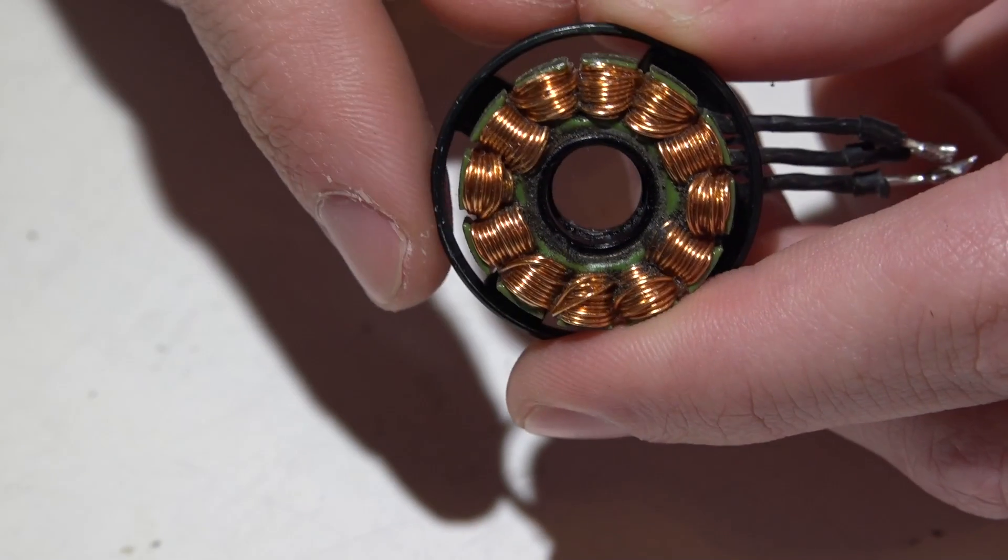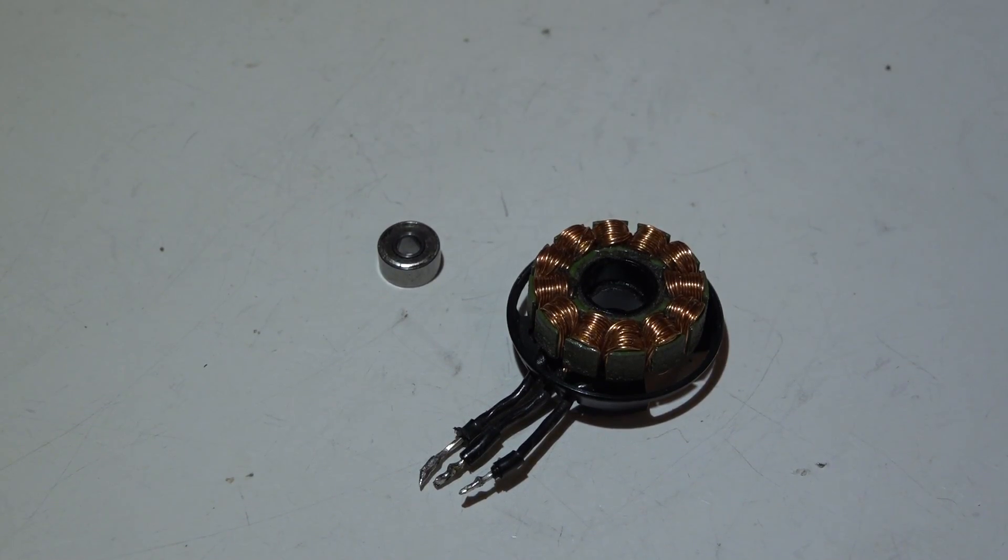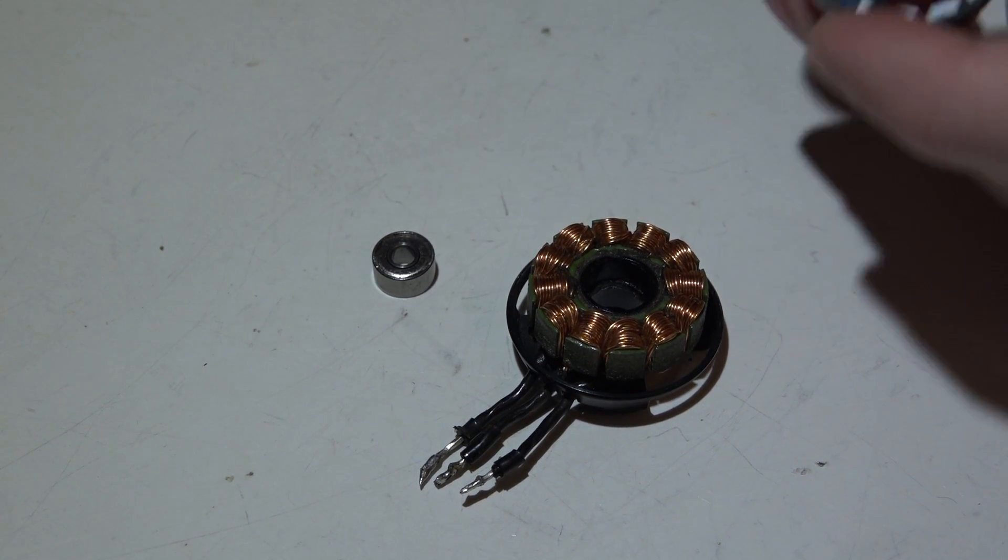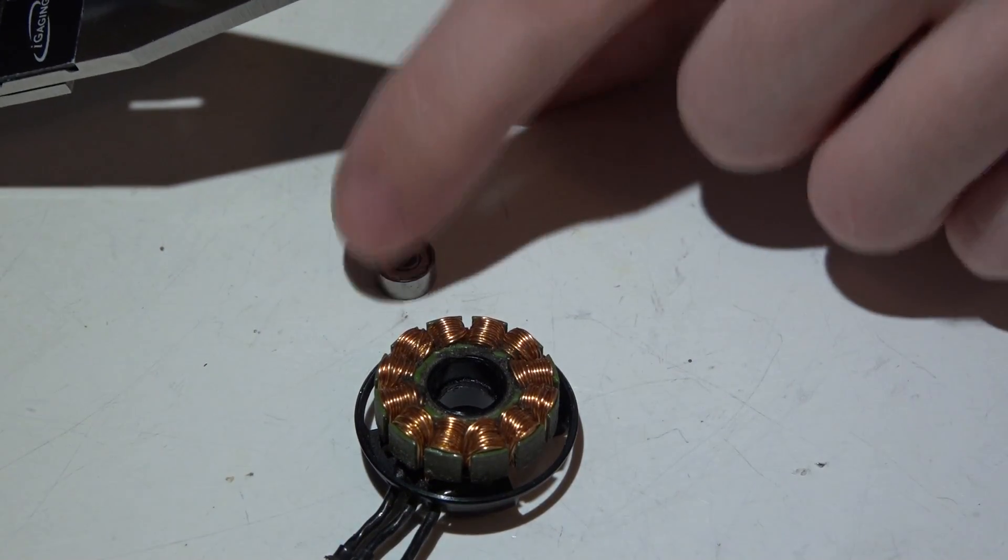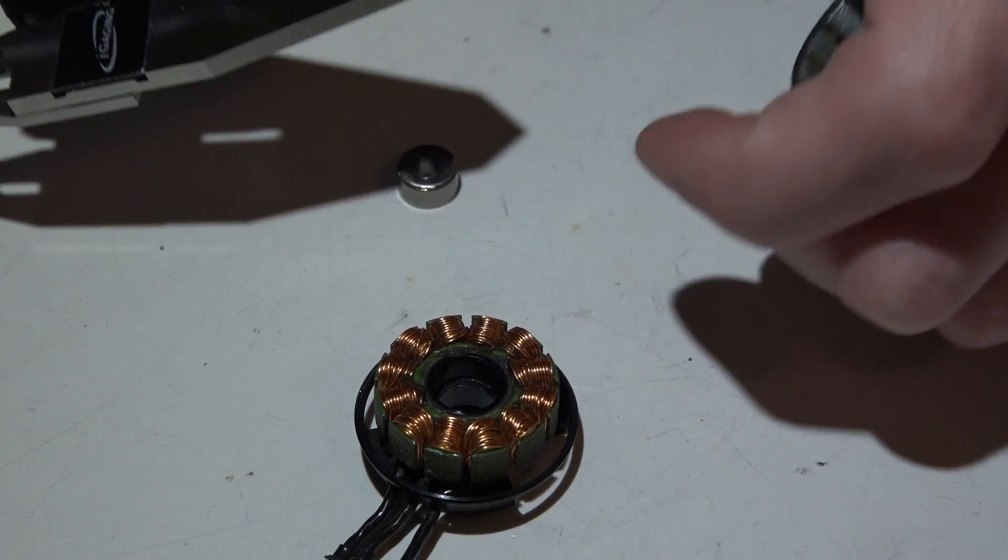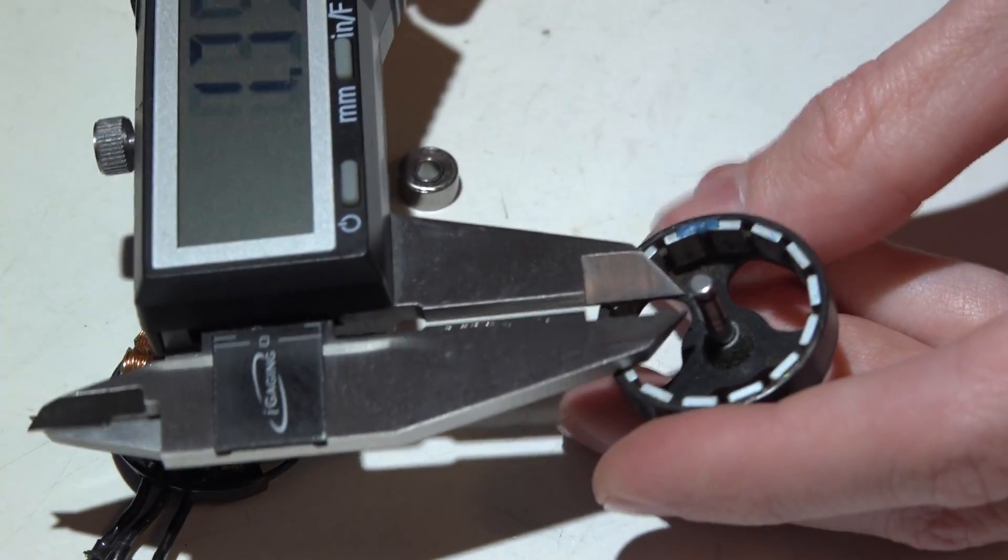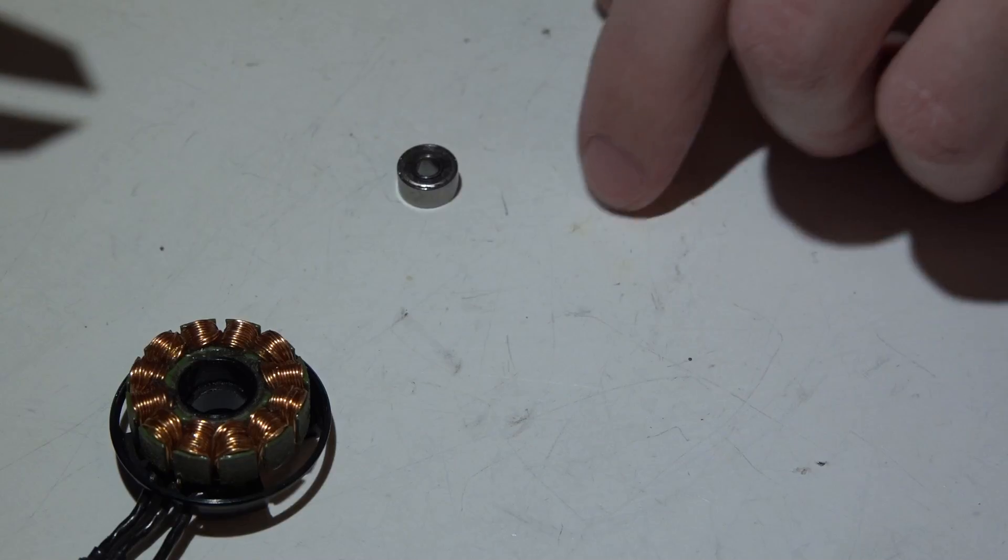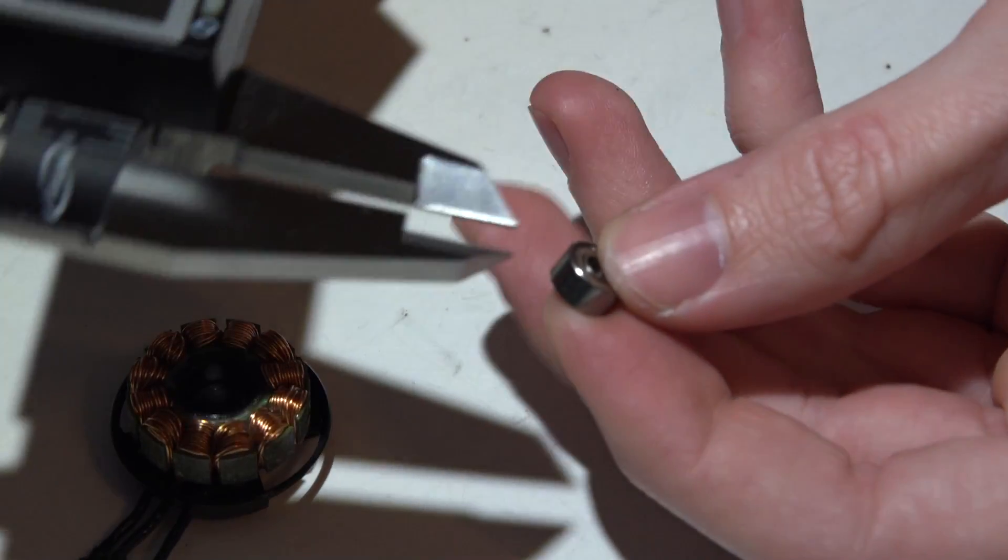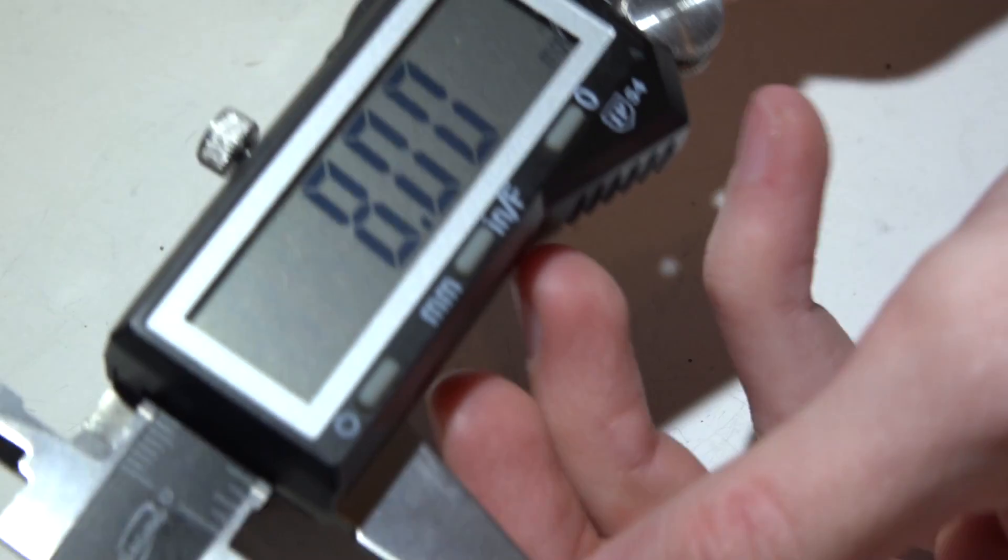Now let's take some measurements to figure out which bearings we need to order and purchase to replace these old ones with. For the first measurement, I'm going to measure the shaft on the inside of the bell. This will be the same diameter as the inner race. We will take our digital caliper and measure that shaft. We're getting three millimeters.